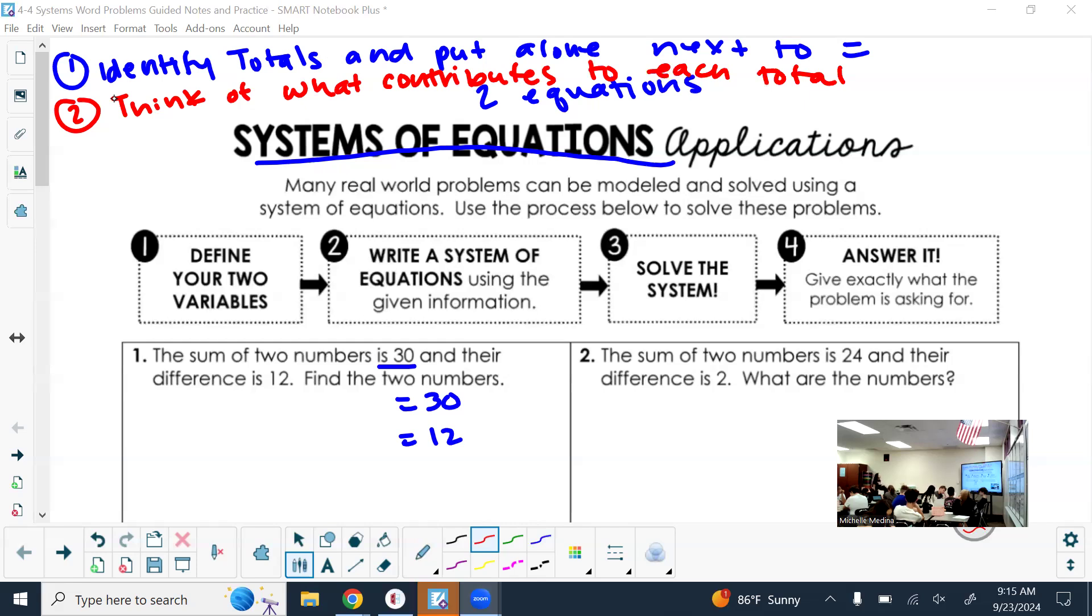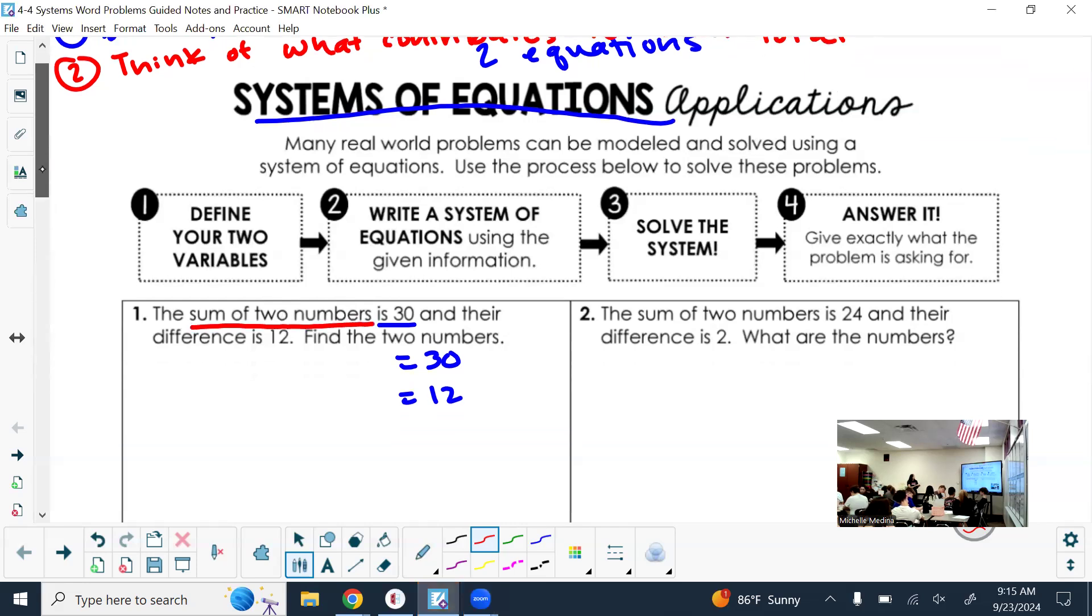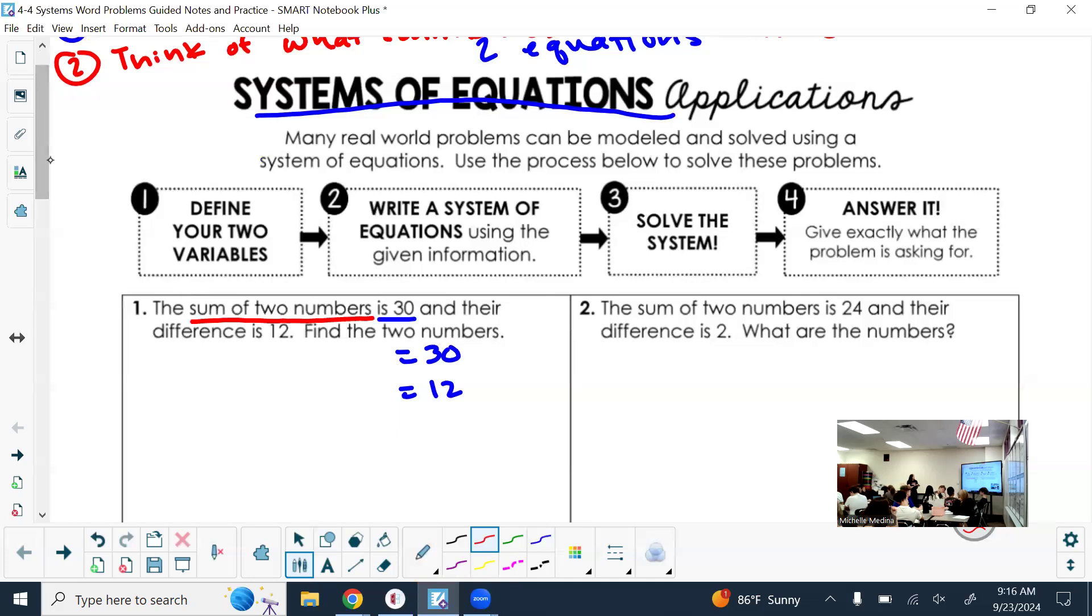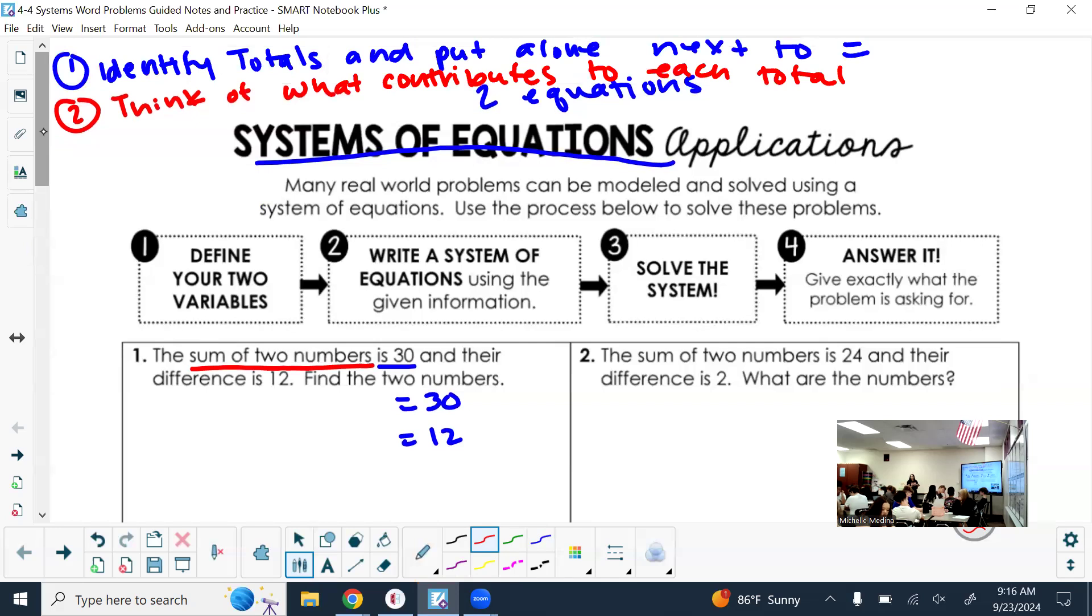I would put 'think of what contributes to each total.' It could be numbers, variables, probably both. Since we're talking about systems of equations, you need to be using the same variables in each equation. In this first one, think of what contributes to the 30.